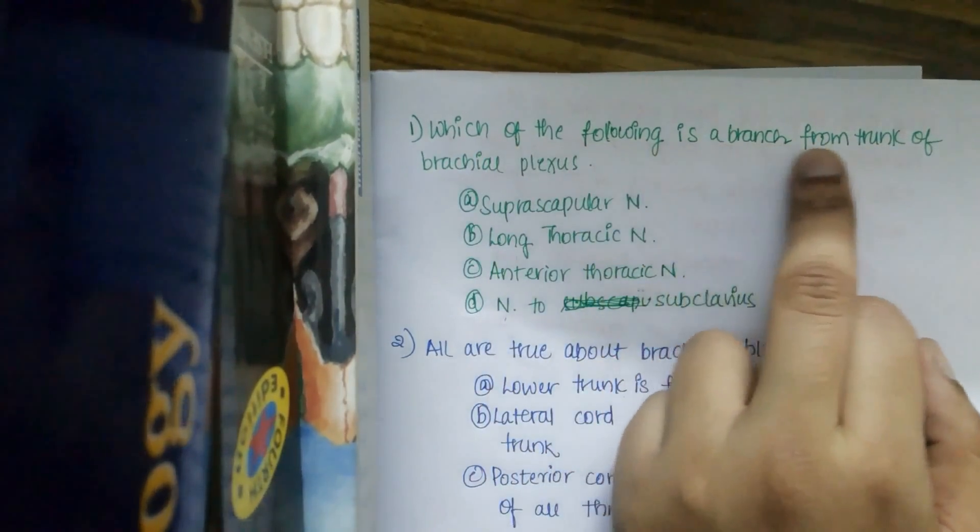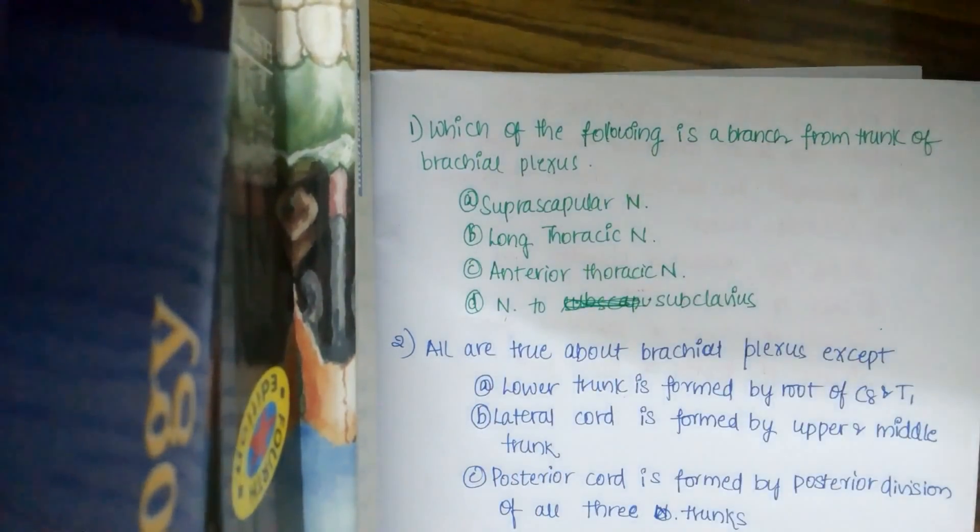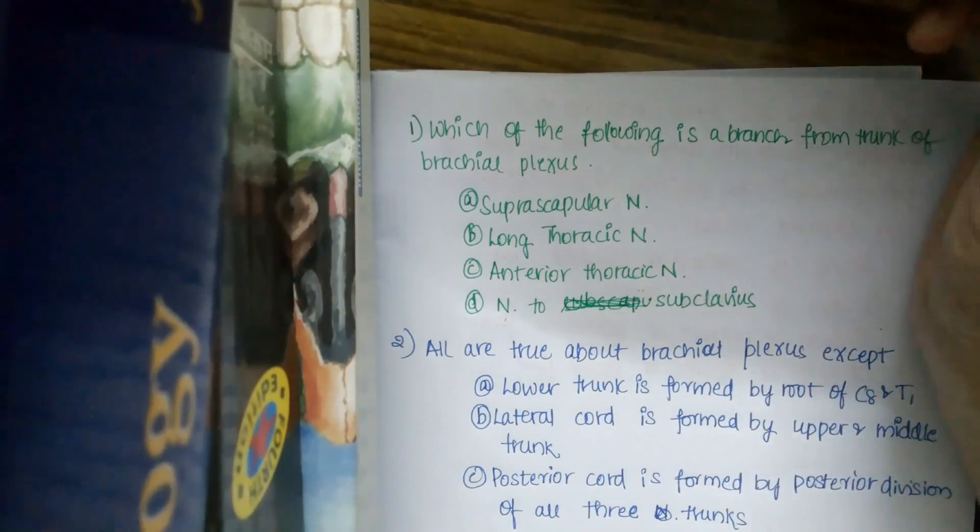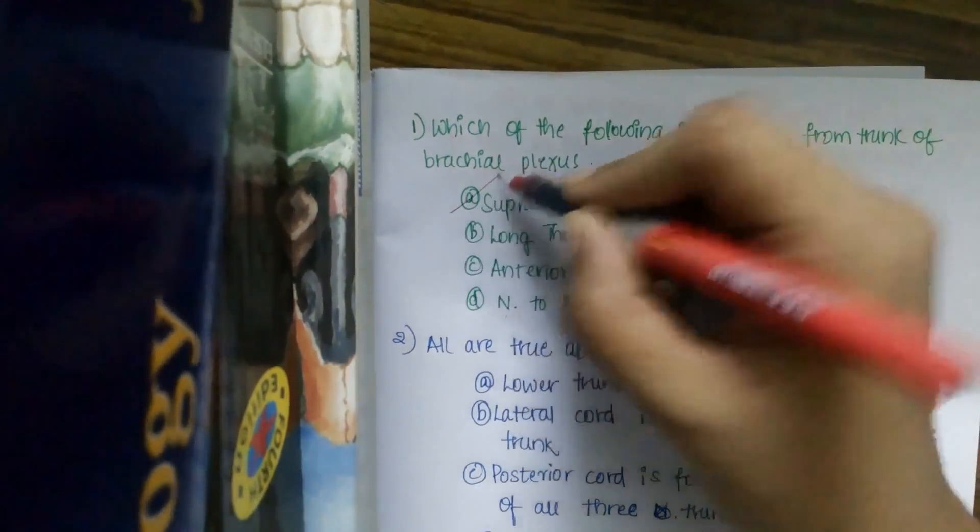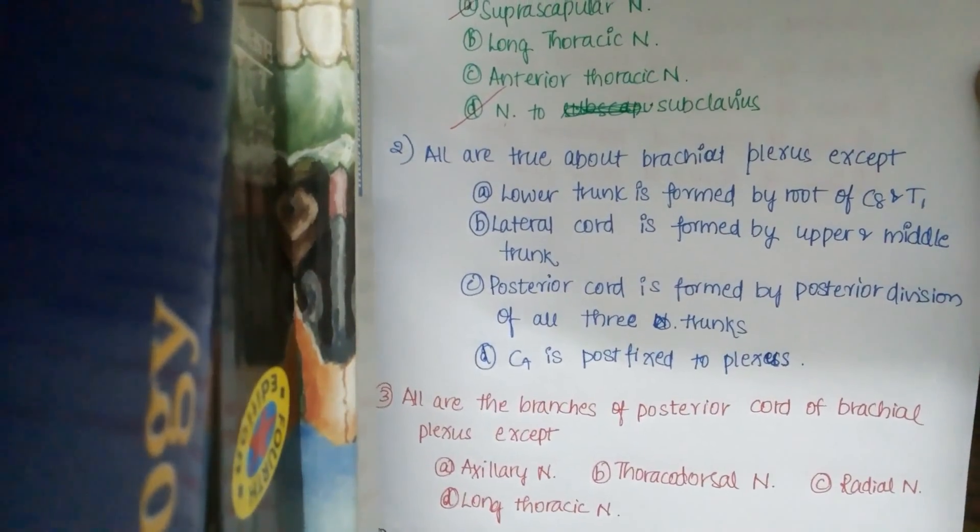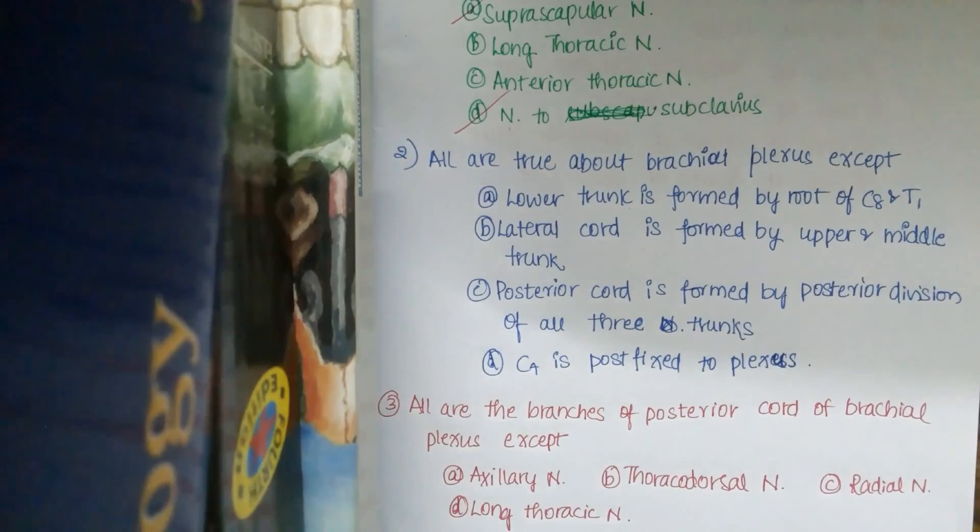Question 1: Which of the following is a branch from the trunk of brachial plexus? As you've seen, it has two branches: suprascapular nerve and nerve to subclavius. Question 2: All are true about brachial plexus except.